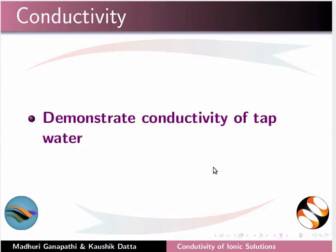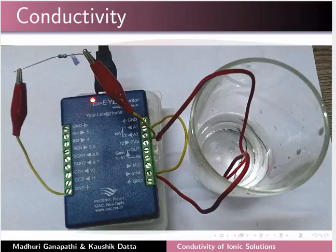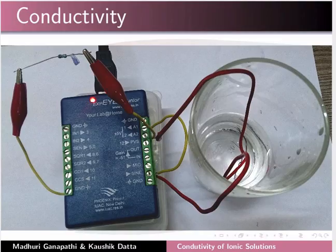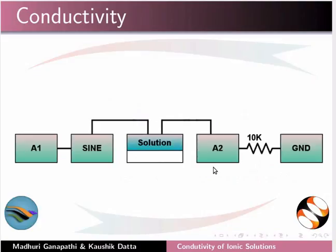Now we will demonstrate conductivity of tap water. I will explain the circuit connections. A1 is connected to sine. Wires from sine and A2 are dipped in a glass tumbler containing tap water. A 10K resistor is connected between A2 and ground. This is the circuit diagram.